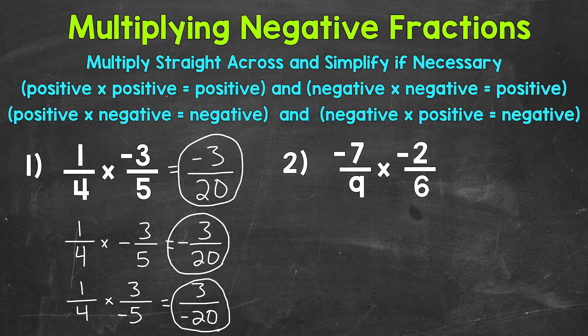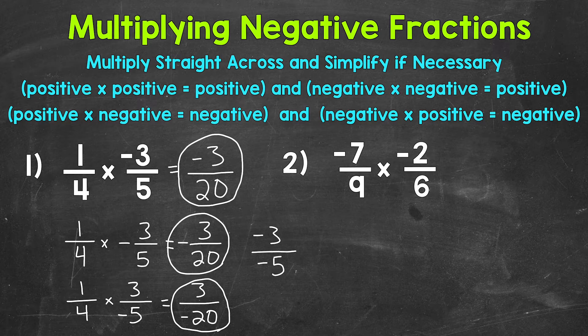The one thing it cannot be is with both the numerator and denominator. For example, if we put the negative with both, this would actually equal a positive because fractions represent division — it would be negative three divided by negative five, giving us a positive result, positive three fifths. So we don't want to put the negative sign with both the numerator and denominator.